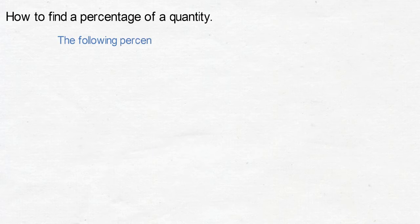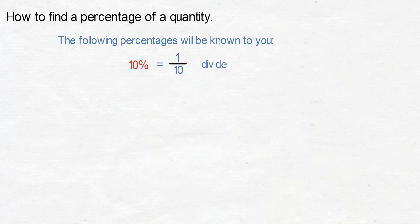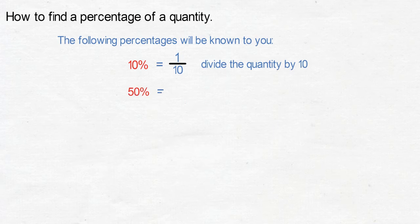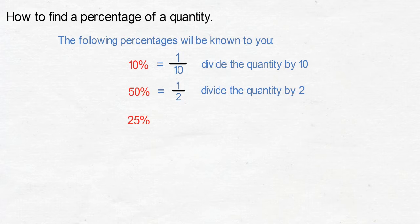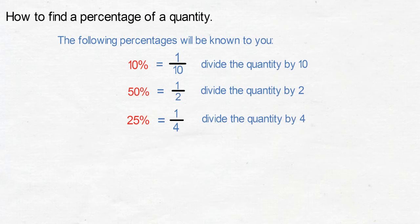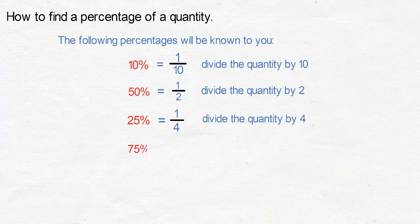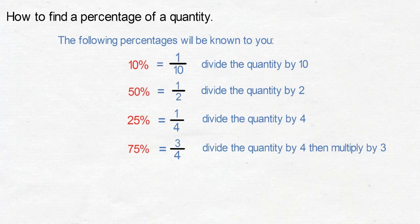How to find a percentage of a quantity. The following percentages will be known to you: ten percent equals one tenth, so divide the quantity by ten. Fifty percent equals one half, so divide the quantity by two. Twenty-five percent equals one quarter, so divide the quantity by four. Seventy-five percent equals three quarters, so divide the quantity by four then multiply by three.